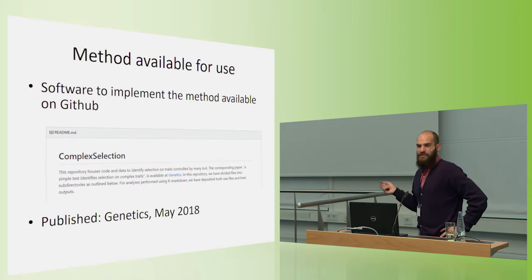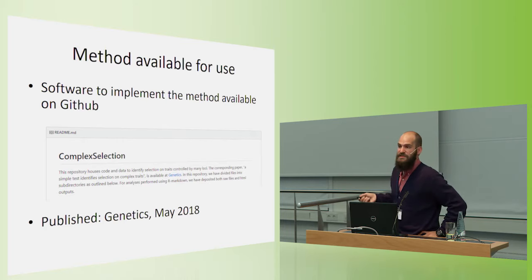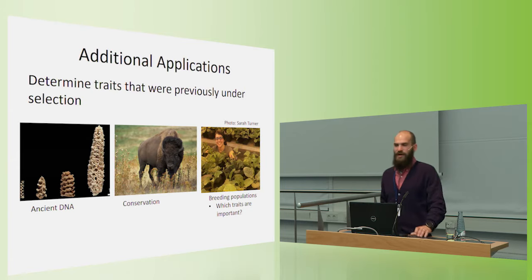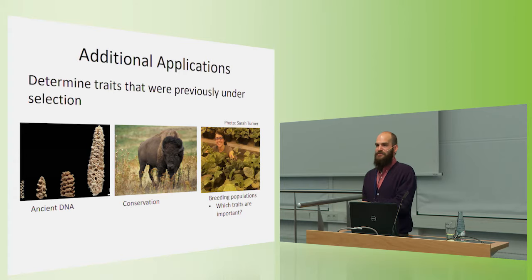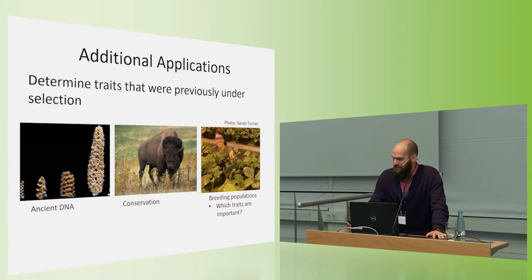So software to implement this method is available on GitHub, and we just published it in May of this year, so hopefully it'll catch on. I'm really excited about the potential uses. And so before I close, I want to talk more about the potential uses, because if anybody's been paying good attention, the natural question I would have been asked is, wait a second, Tim, you showed us a few breeding populations that were bred with specific targets, and then you identified those targets that you already knew were under selection. That might be fine academically, but where are the uses of that?